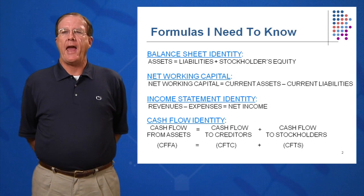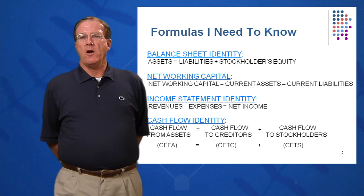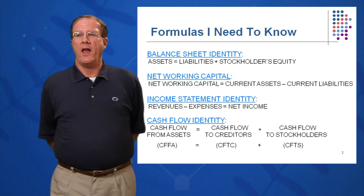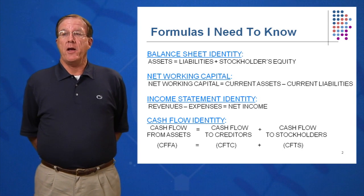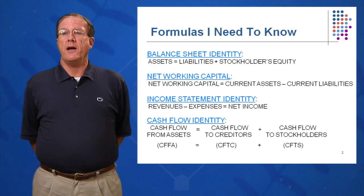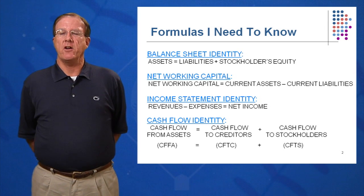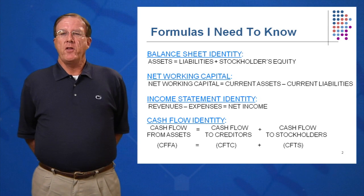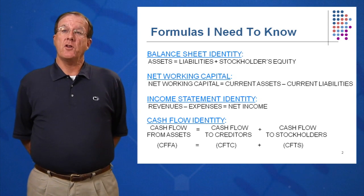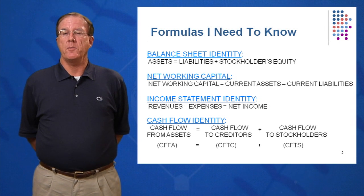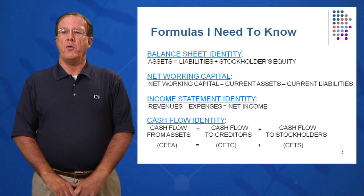Another key equation is net working capital, which we went over in Session 1. Net working capital is current assets minus current liabilities — current assets on the left side of the balance sheet and current liabilities on the right side, both due within one year. The income statement identity is revenues minus expenses equals net income, or sales minus cost equals net income.